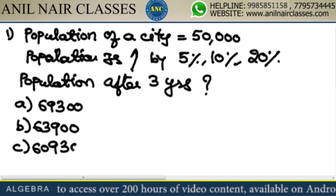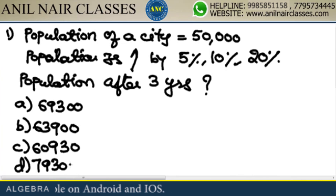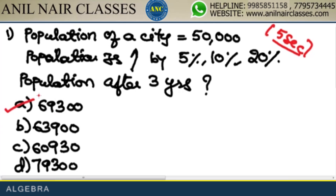I am only here with one intention: to maximize your score. The answer is 693,000. Population of a city is 50,000. First year it is increased by 5%, second year by 10%, third year by 20%. If you give me this question, it will take 5 seconds to solve. By looking at the question itself, I will say the answer is 693,000. Now see my approach.